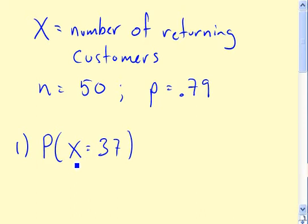The first part asks for the probability that X, the number of returning customers out of our sample of size 50, is exactly equal to 37. We could use the formula for the binomial distribution probabilities, but really it's easier probably just to do the calculation in Excel. So we'll go ahead and do that here.